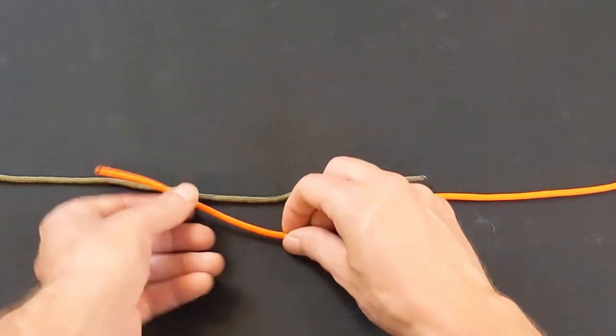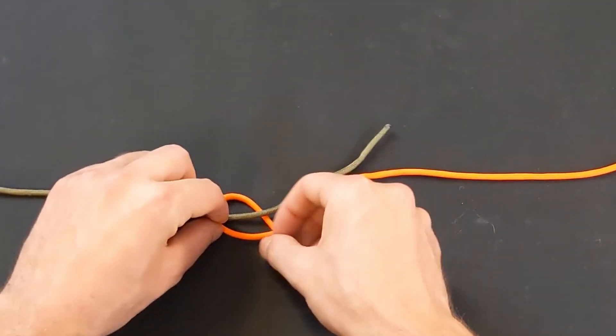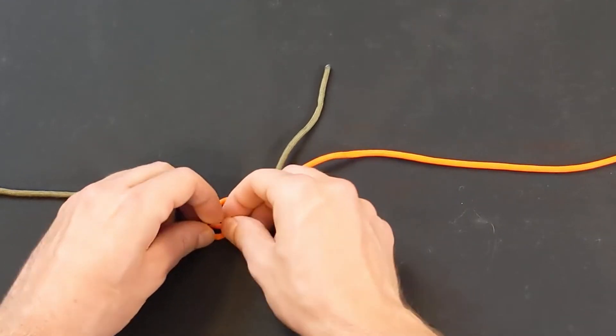Overlap the two lines parallel to one another. Take one end over the top of the other, then back and underneath both lines and into the loop you just made.